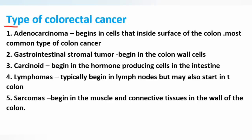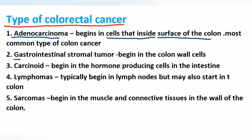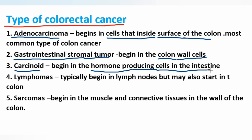Types of colorectal cancer: Adenocarcinoma begins in cells that line the inside surface of the colon — this is the most common type. Gastrointestinal stromal tumor begins in the colon wall cells. Carcinoid begins in hormone-producing cells in the intestine. Lymphomas typically begin in lymph nodes but may also start in the colon. Sarcomas begin in muscle cells and connective tissues in the wall of the colon.